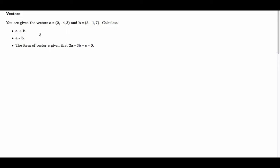In this example, we're given the vectors a and b, and we've been asked to calculate a plus b, a minus b, and we've been asked to find the form of vector c.